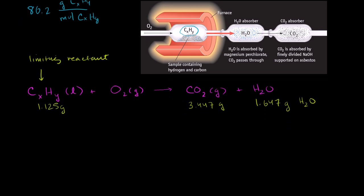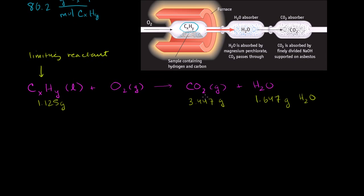To find the empirical formula, we figure out how many moles of carbon dioxide and water are produced, then determine how many moles of carbon and hydrogen are in those products. The ratio of carbons to hydrogens in the products must be the same as in the reactants, since they all came from the mystery hydrocarbon — not from the oxygen. A good place to start is figuring out how many moles of each product we have.